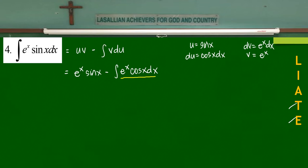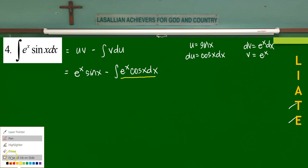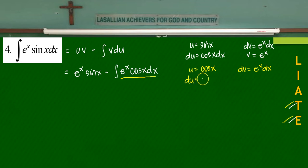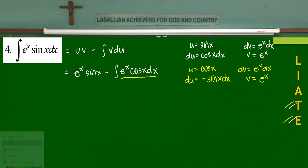We apply integration by parts a second time to the integral of eˣ·cos(x) dx. It's still trigonometric and exponential, so the new u is cos(x) and dv is eˣ dx. The new du is negative sin(x) dx and the new v is eˣ. We apply integration by parts again to replace that integral.